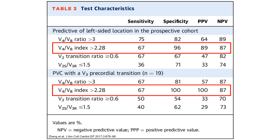In addition, normalizing PVC localization criteria to the sinus rhythm results in the highest specificity when compared with other validated criteria, as shown in this table.